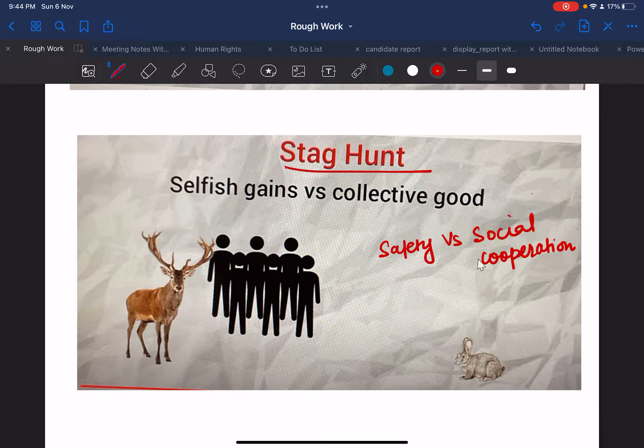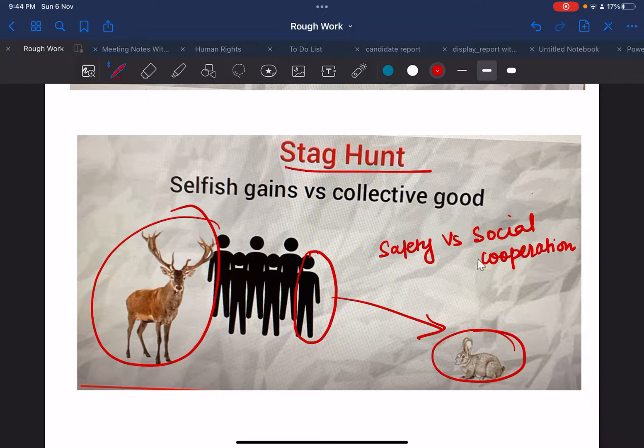A situation when two individuals go out on a hunt. Each can individually choose to hunt a stag or a hare. If one person chooses to go for this one, then the rest of the people can go for the stag, or individually they will go for that one.